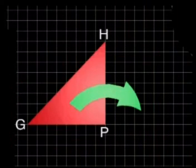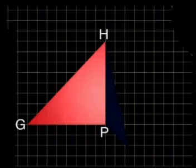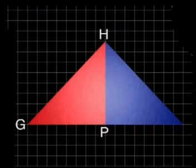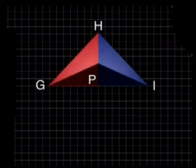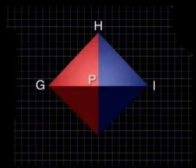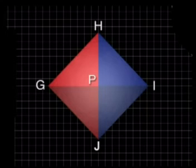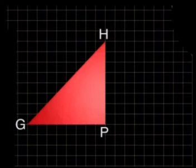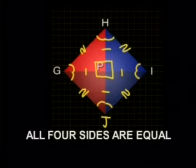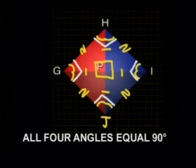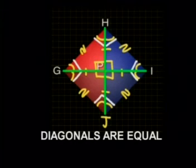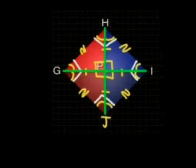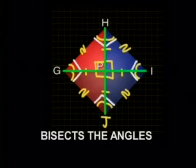We reflected the right-angled isosceles triangle over line HP so that the total shape was one half of the square. We then reflected that complete new triangle over line GPI to get the final square GHIJ. The square was created by using the original triangle GHP. We can conclude that a square is a special quadrilateral with: four equal sides; all four angles equal to 90 degrees; four lines of symmetry; diagonals that are equal, perpendicular bisectors of each other, and that bisect the angles of the square.